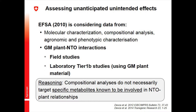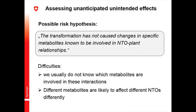The reasoning in the EFSA guidance is that compositional analysis does not necessarily target specific metabolites known to be involved in NTO-plant interactions. A corresponding risk hypothesis would be: the transformation has not caused changes in specific metabolites known to be involved in NTO-plant relationships. I have major problems with that because we usually do not know which metabolites are involved in those plant-insect interactions. Even worse, different metabolites are very likely to affect different non-target species in very different ways.